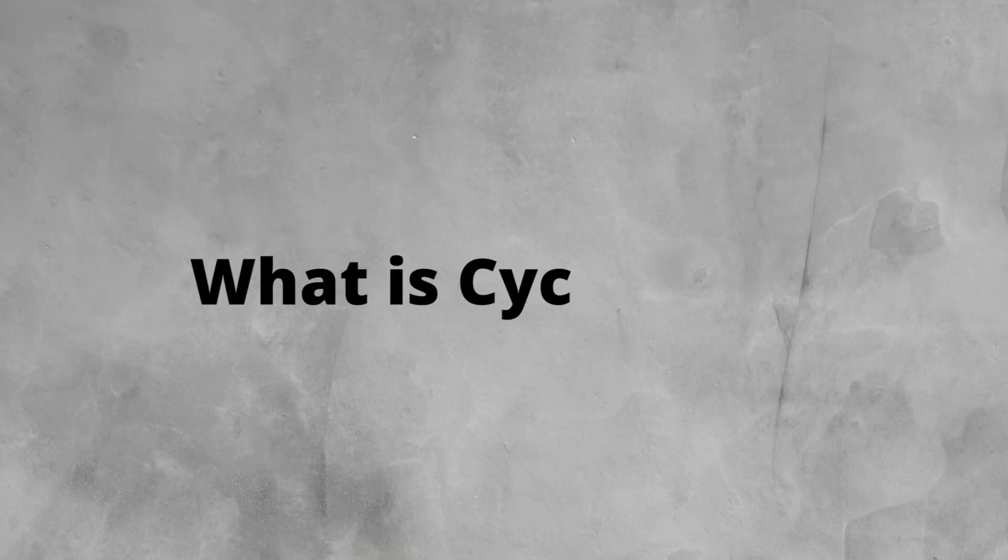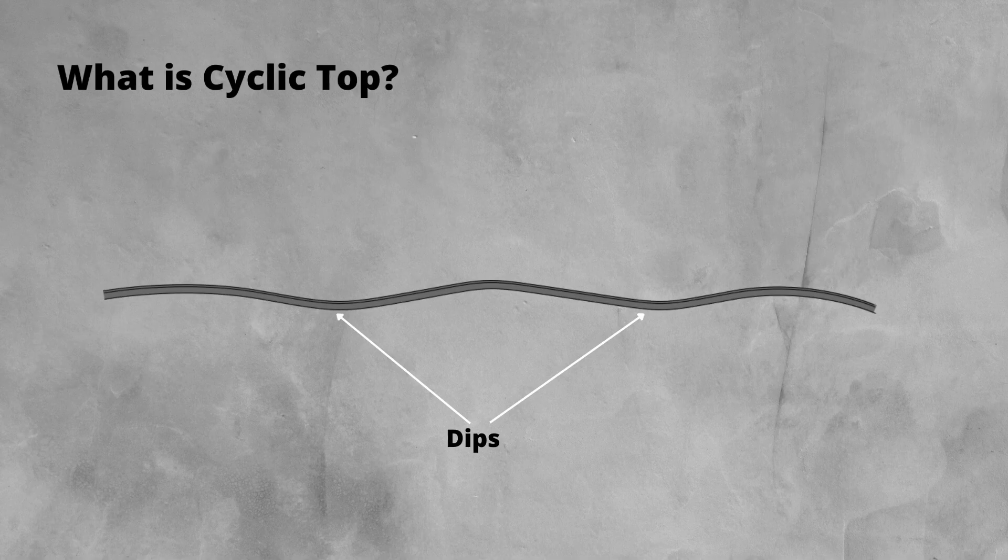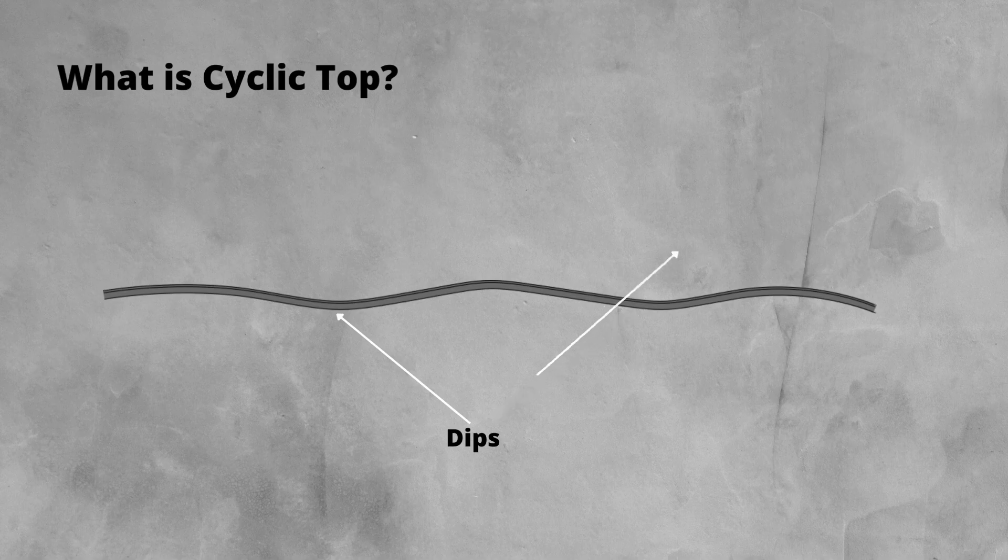So what is cyclic top? Cyclic top is a regular set of dips on either one or both rails, like a wave. It can vary in two main ways: the length between the peaks of the wave or its wavelength, and then the size of the dip or its amplitude.